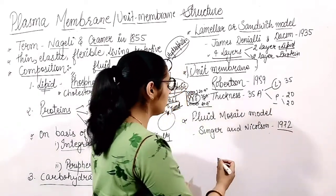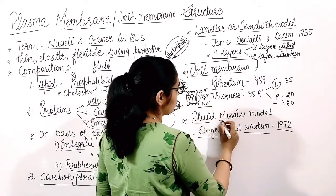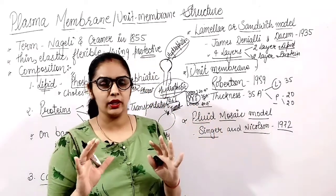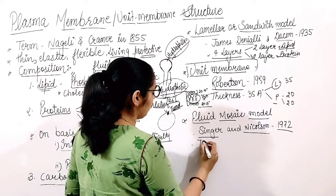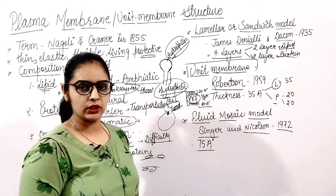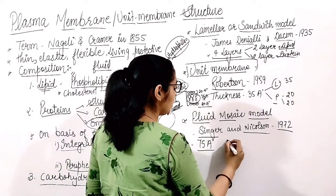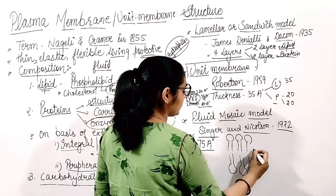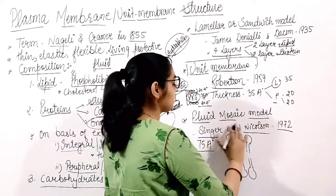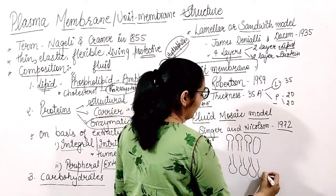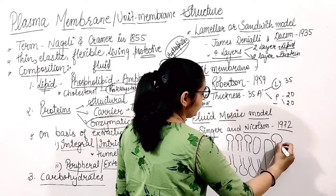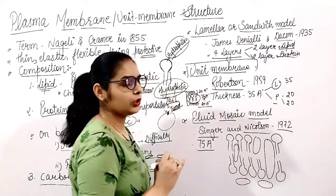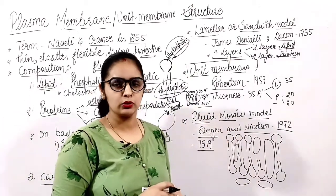In 1972, Singer and Nicholson gave us the fluid mosaic model of the plasma membrane. They said the plasma membrane is 75 Ångströms thick, with a lipid bilayer in which proteins are embedded like icebergs in a sea of lipids. Some proteins are integral proteins and some are peripheral proteins.